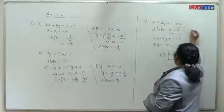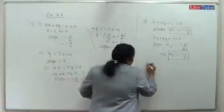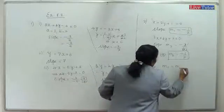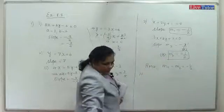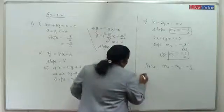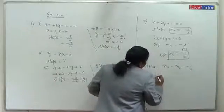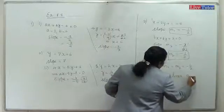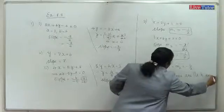Since m1 equals m2 equals minus one half, therefore the two straight lines are parallel to each other.